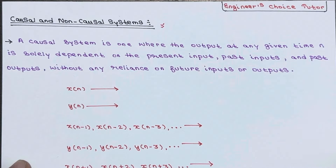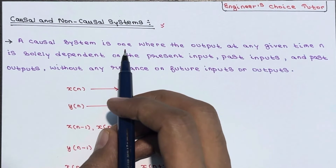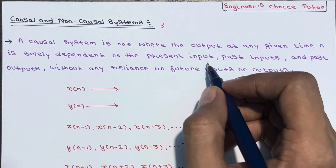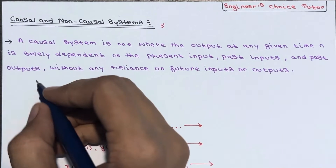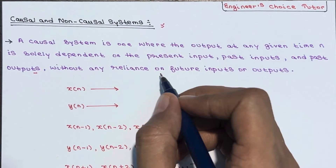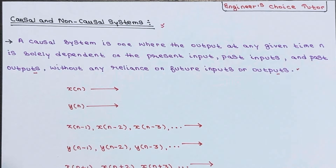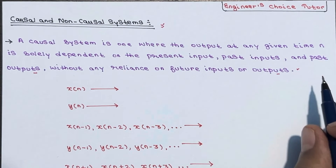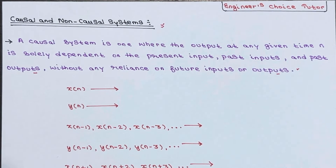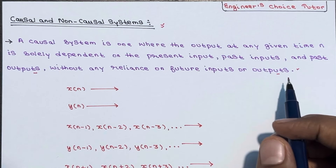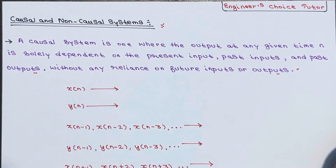A causal system is one where the output at any given time n is solely dependent on the present input, past inputs, and past outputs, without any reliance on future inputs or future outputs. A system is said to be causal if the output at any time n depends only on the present input, past inputs, and past outputs, but does not depend upon future inputs or future outputs.